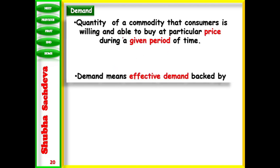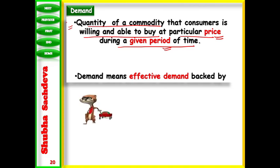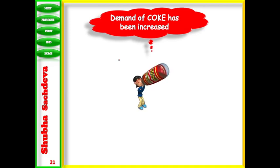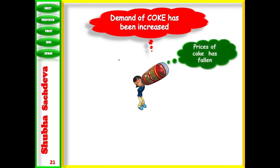The difference between demand and desire is: demand is the desire backed by the ability and willingness to pay. A person is willing and has the ability to pay. Desire means only willing to buy something but not having the ability, not having the money to buy that thing. So it cannot be converted into demand. Demand means effective demand.